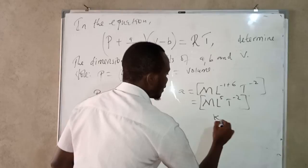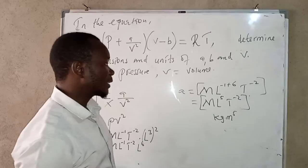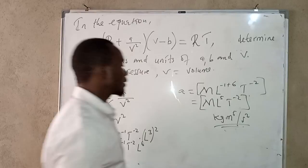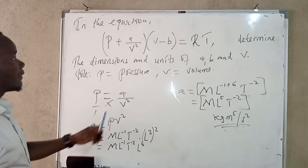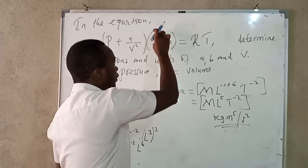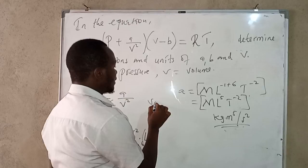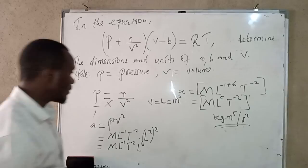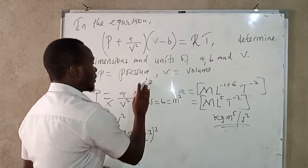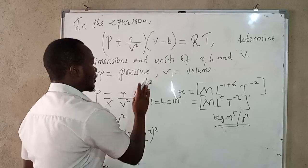In terms of units, A is kilograms times meters to the power 5 per second squared — kg·m⁵·s⁻². For B, the units and dimensions are the same as those for volume V, which is L³ in dimensions and m³ in units. So the final answers are: A has dimensions M L⁵ T⁻², and B has dimensions L³.